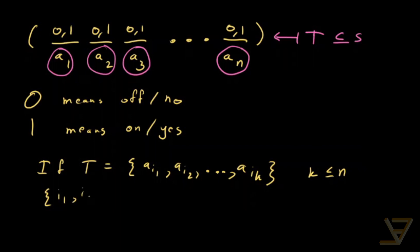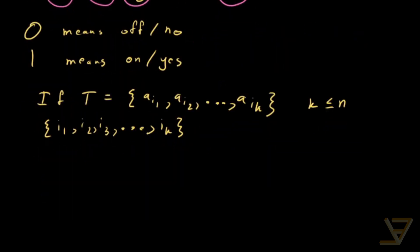Then we're just going to take the set of indices, i1, i2, i3, all the way through to iK. And those are the indices that get mapped to 1 in the list. And all other indices get mapped to 0.